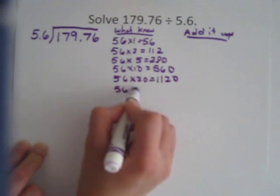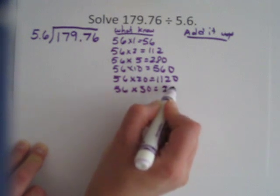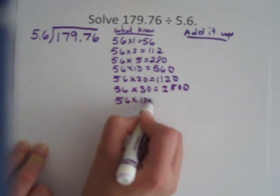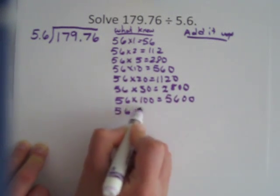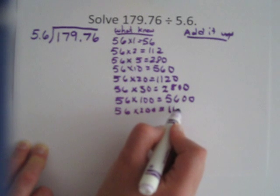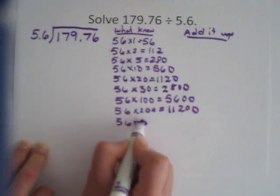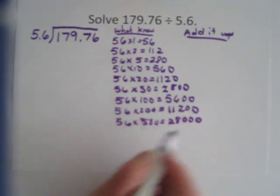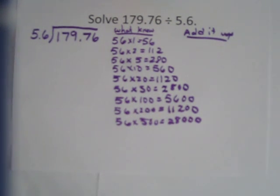56 times 50 is 2,800. 56 times 100 is 5,600. 56 times 200 is, I'm sorry, 11,200. 56 times 500 is 28,000. And right there I know I'm getting too big because if I ignore this decimal I have a number smaller than 28,000. So I'm done with what I know.